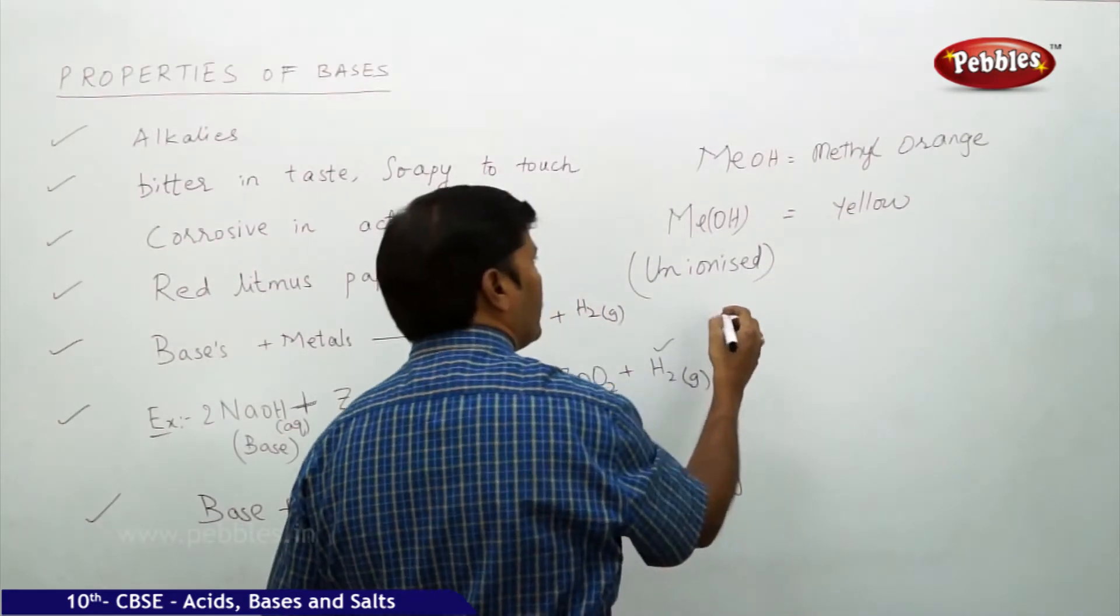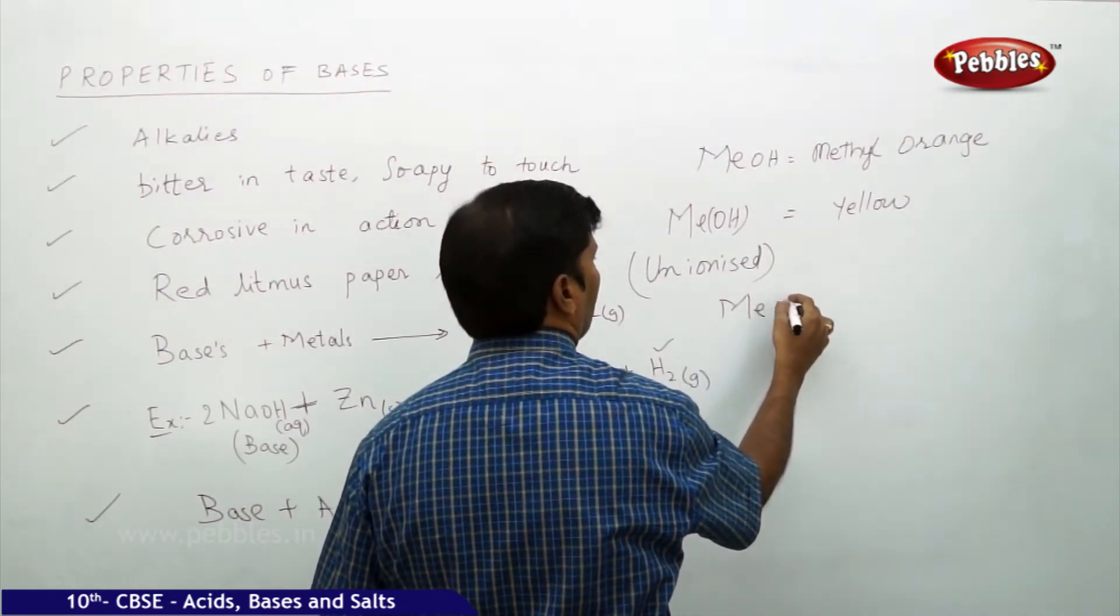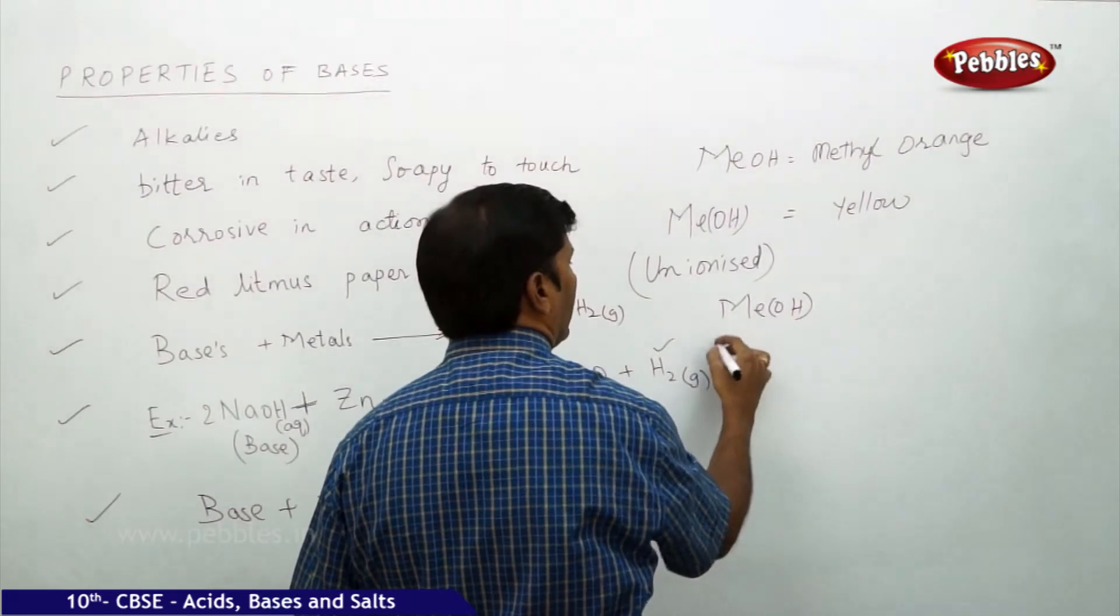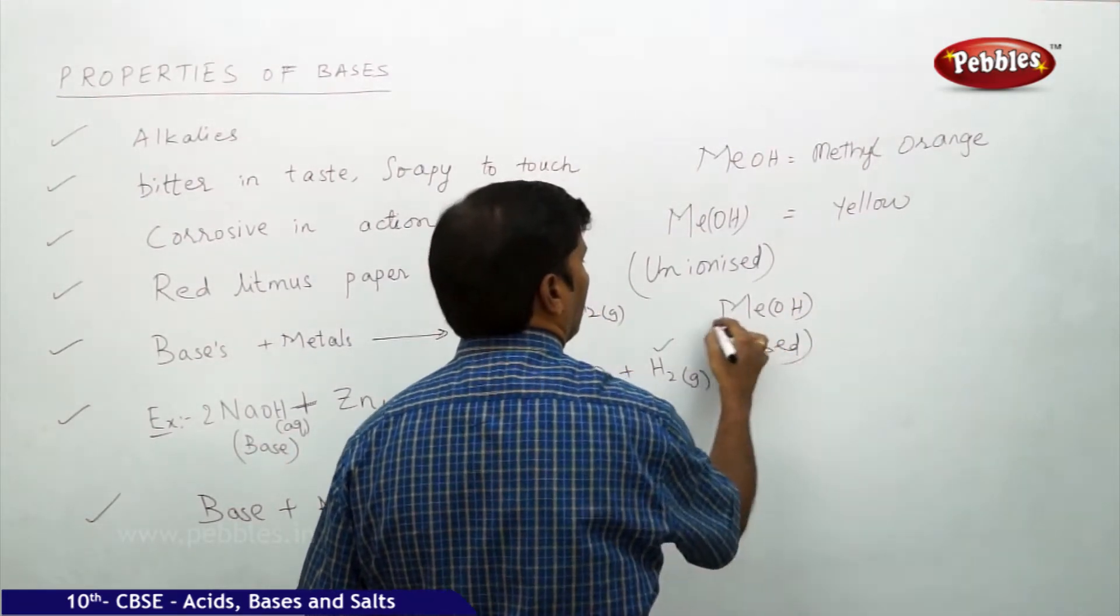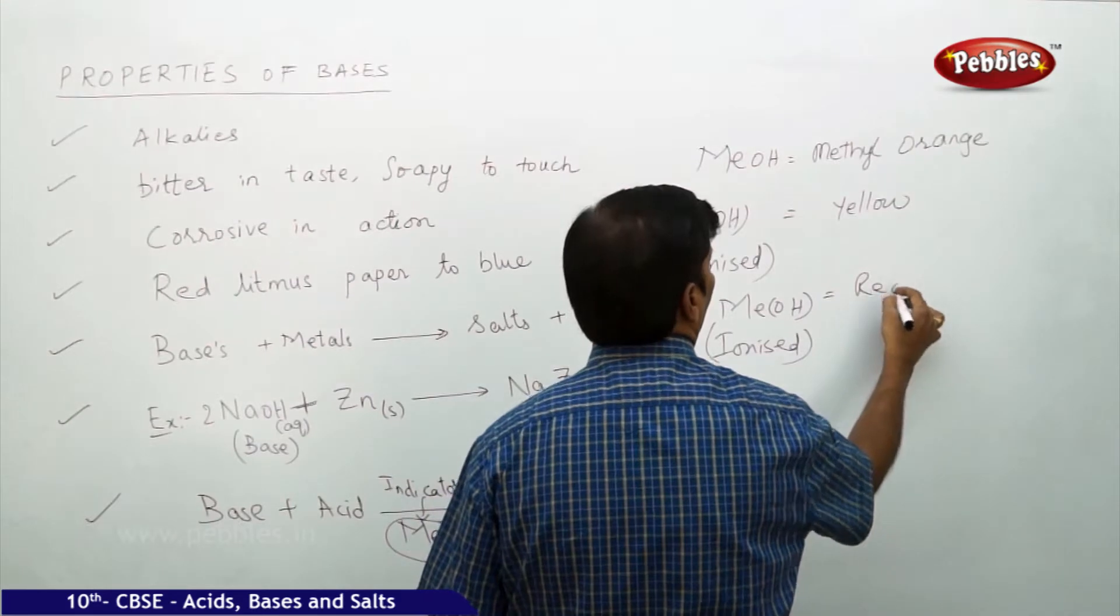And in the ionized state, the same methyl orange, MeOH in the ionized state, it changes to red.